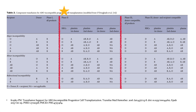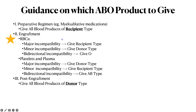Phase two is the difficult part — this is where the conceptual framework gets complicated. During phase two, the engraftment stage, for red blood cells: major incompatibility, you give the recipient type; minor incompatibility, you give the donor type; bidirectional incompatibility, you give O. That's just for red blood cells. For platelets and plasma: major incompatibility, you give the donor type; minor incompatibility, you give the recipient type; and bidirectional incompatibility, you give the AB type.